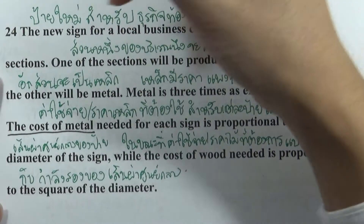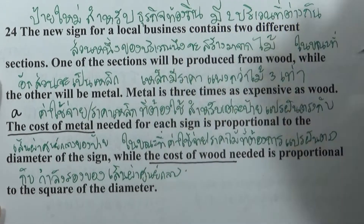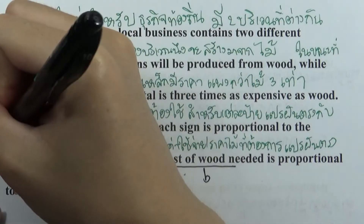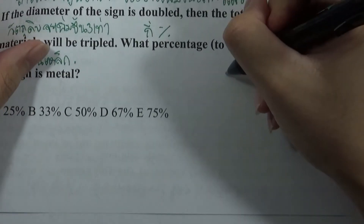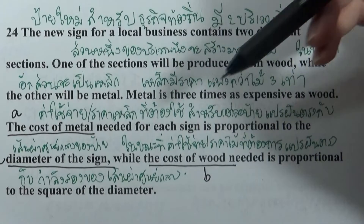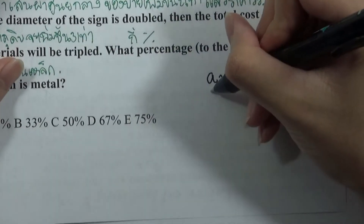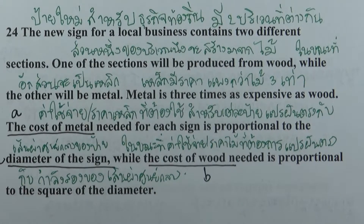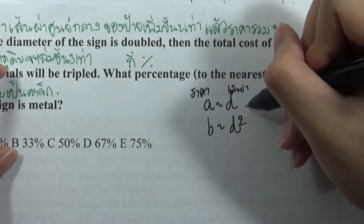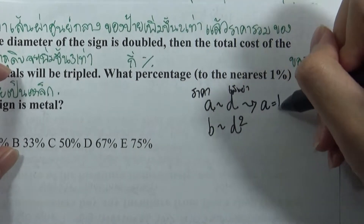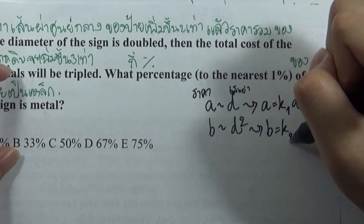Let the cost of metal be A, the cost of wood be B, and the diameter of the sign be D. The cost of metal needed for each sign is proportional to the diameter, so A is proportional to D, which means A = K1·D. The cost of wood needed is proportional to the square of the diameter, so B = K2·D².